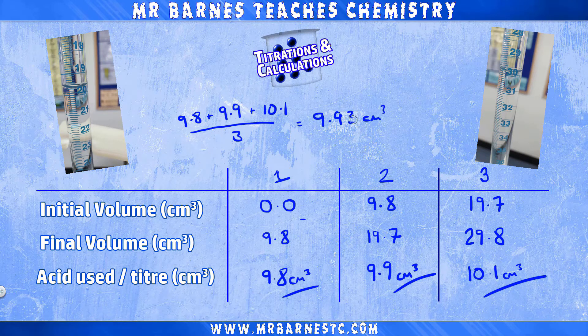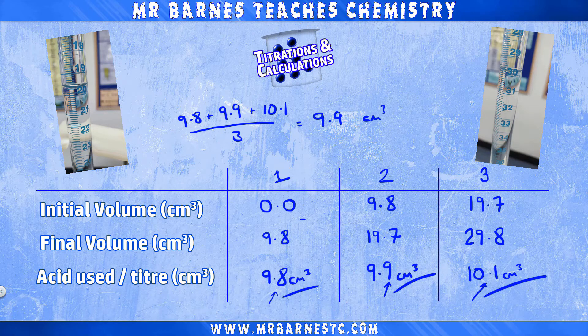I've done it to one decimal place because that's what I've taken my readings to. If my results weren't concordant, I would have carried on doing the titration until I had three sets of concordant data.